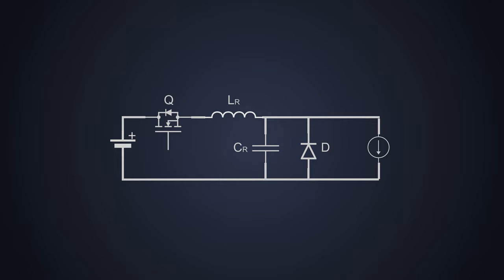For simplicity, we can replace this output LC circuit and load with a constant current source. Because no matter what, a constant current will flow through the output of this converter.